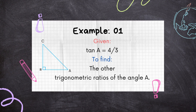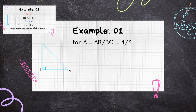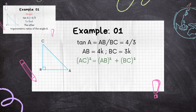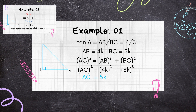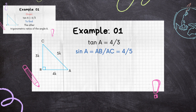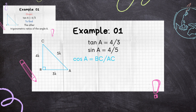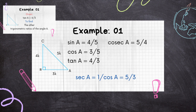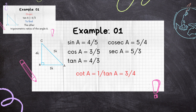Example 1: We are given that tan A is 4 by 3. We let AB = 4k and BC = 3k. Using Pythagoras, AC² = AB² + BC² = 4k² + 3k², so AC = 5k. Now we can find the other trigonometric ratios: sin A = AB/AC = 4/5, cos A = BC/AC = 3/5, cosec A = 1/sin A = 5/4, sec A = 1/cos A = 5/3, and cot A = 1/tan A = 3/4.